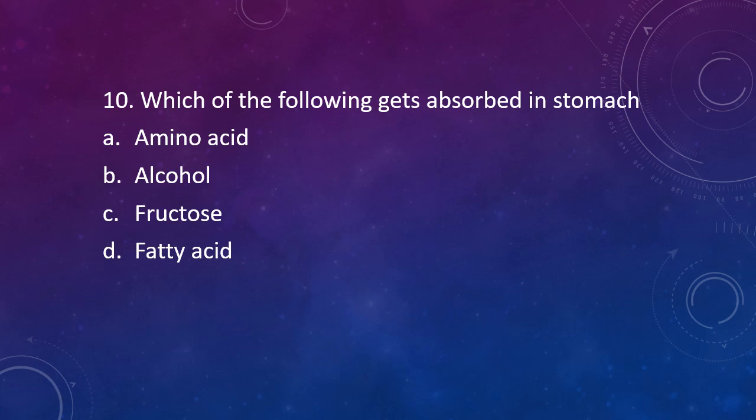Question 10. Which of the following gets absorbed in stomach? Option A - Amino acid, Option B - Alcohol, Option C - Fructose, or Option D - Fatty acid. The correct answer is Option B, that is alcohol gets absorbed in stomach.